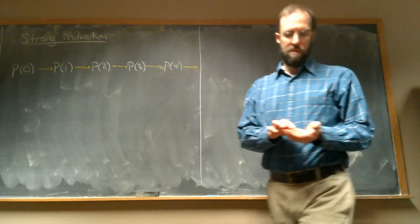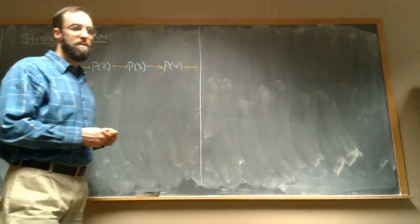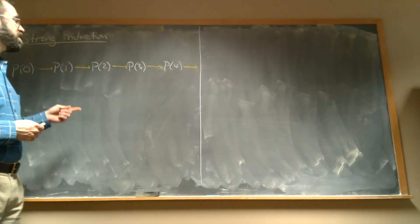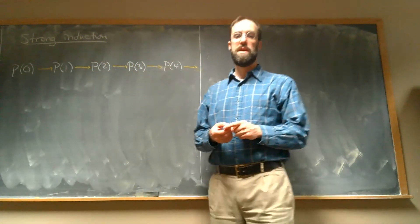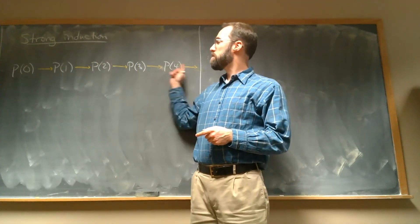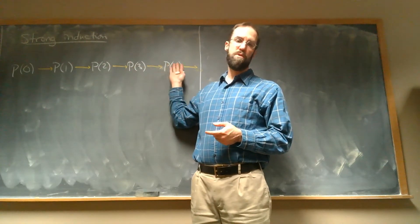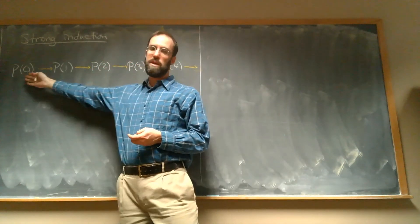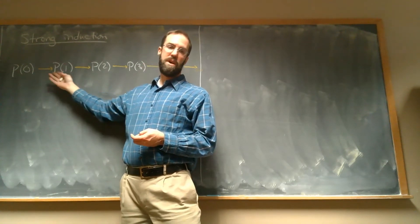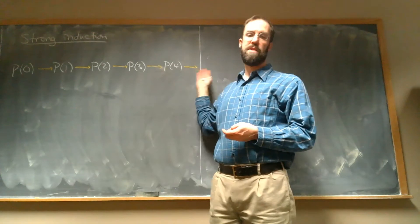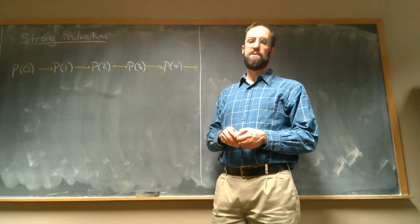So remember our motivation for induction. We have some proposition P that we're trying to show for all natural numbers. We imagine proving this chain of implications, right, where we start by proving the base case P(0), and then each one will imply the next one, and that's going to give us all the natural numbers.